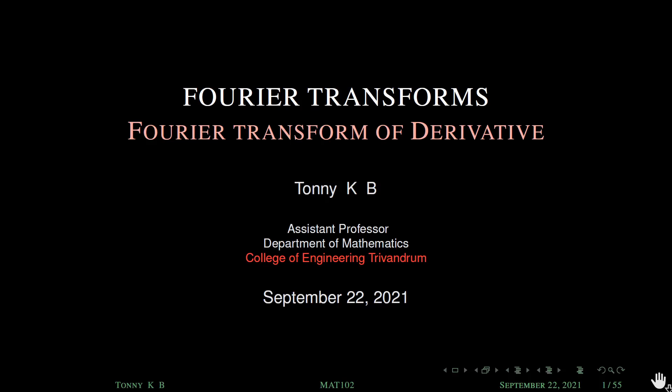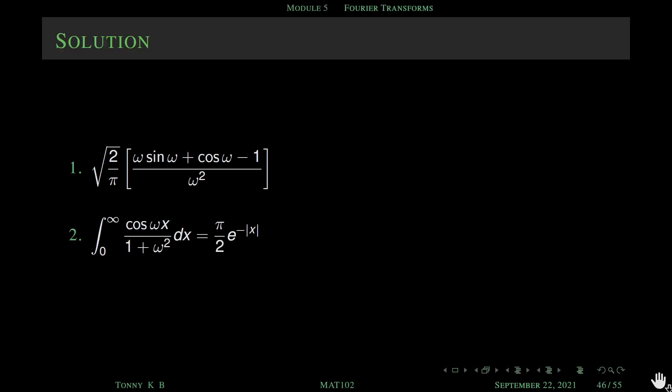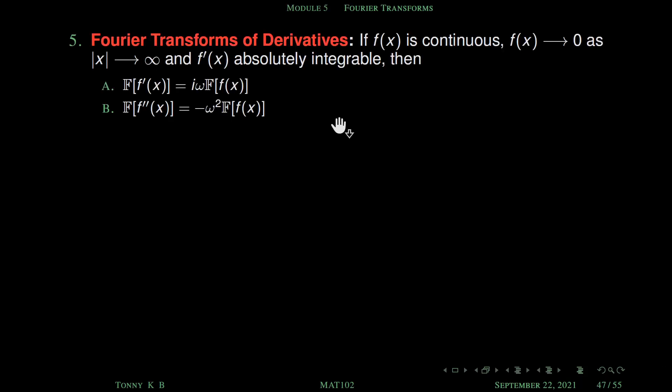Namaskaram. Today we will discuss another property of Fourier transform, that is the Fourier transform of the derivative of a function. Fifth property: it is the Fourier transform of derivatives.